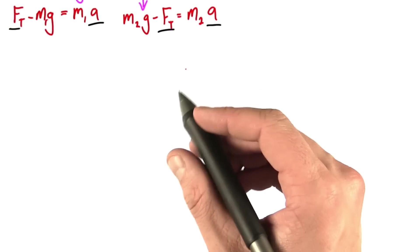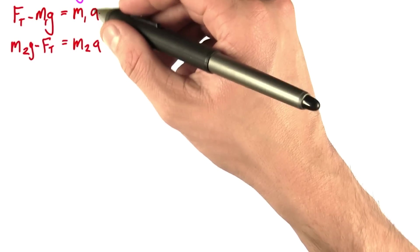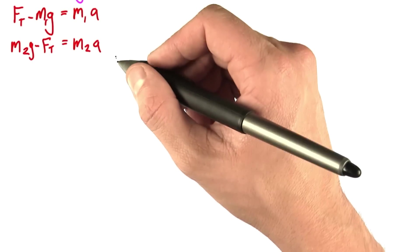So here we have our two equations. I like to write them one above the other to make things a little simpler for me. Now my goal is to eventually know what the acceleration of this system is. I'm going to do that by first solving for the tension in one of these equations, and then plugging in, and let me show you what I mean by that.